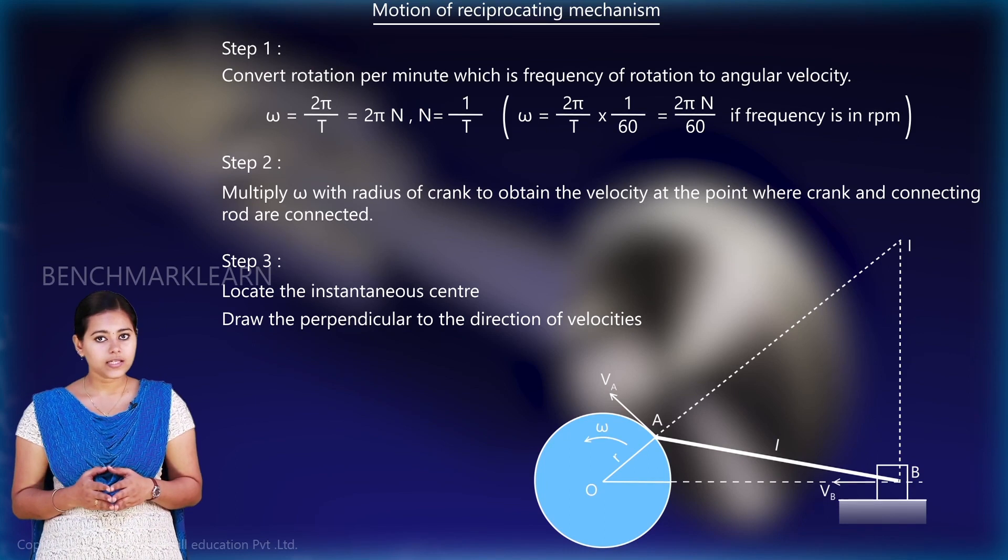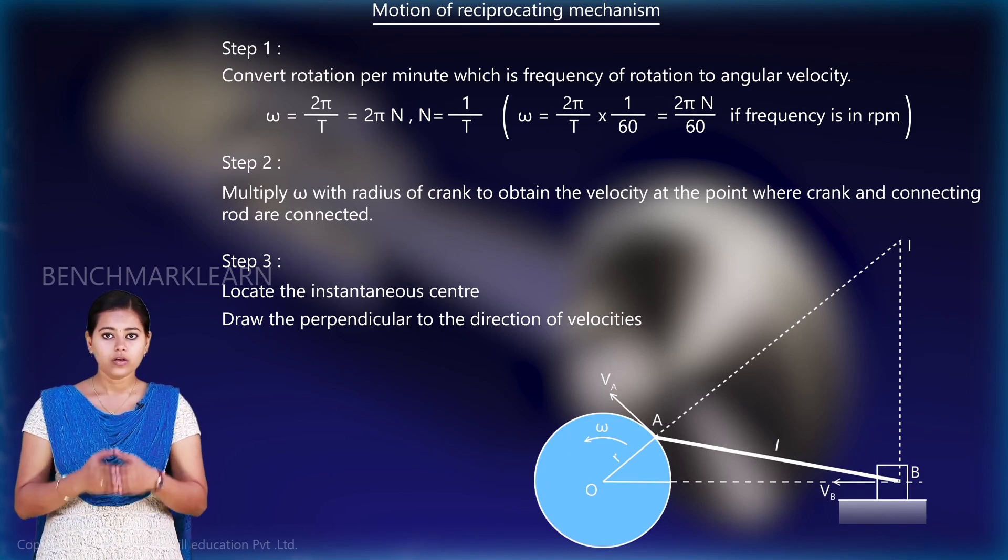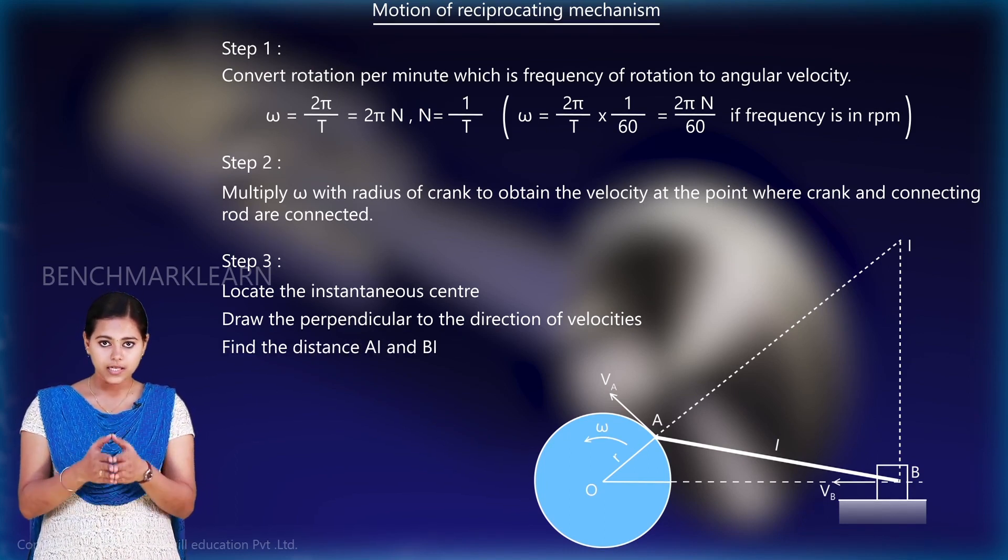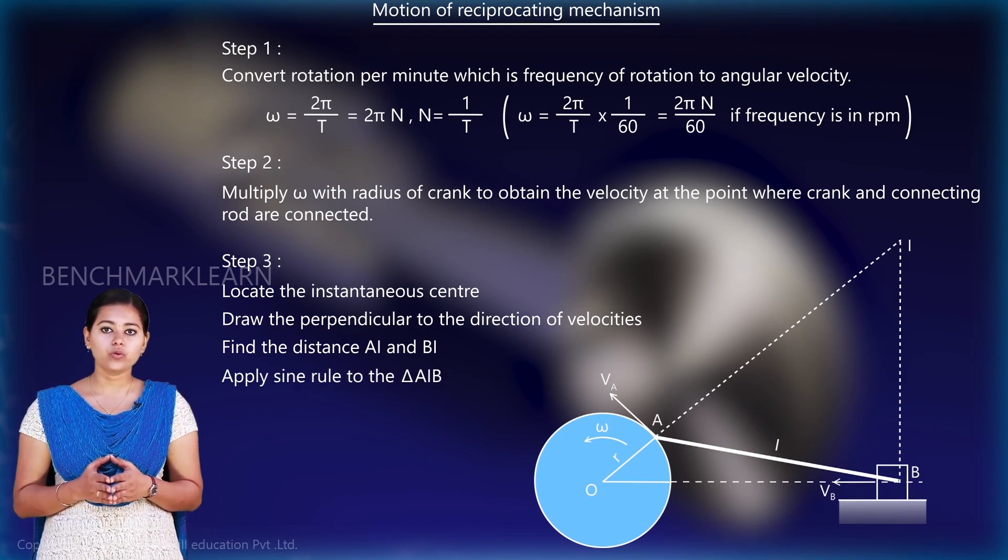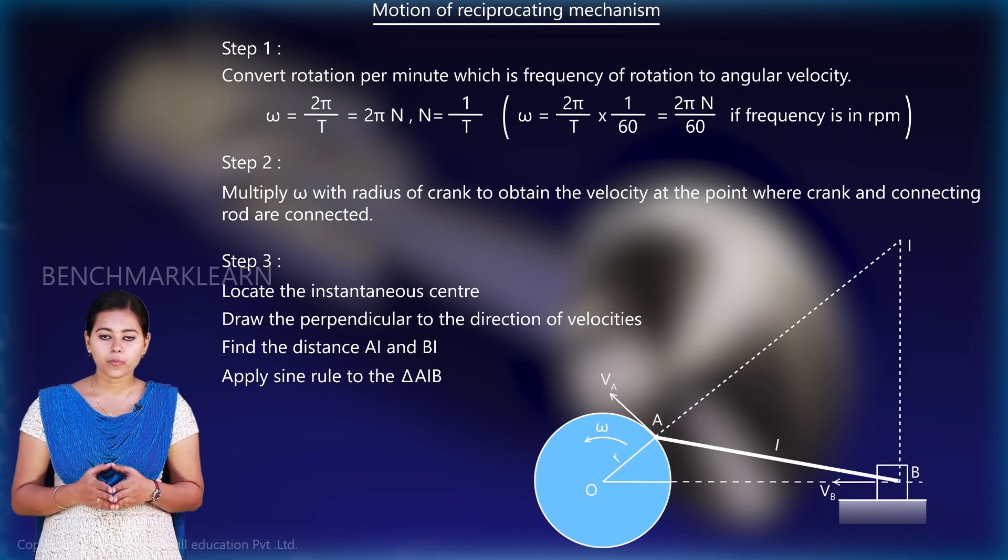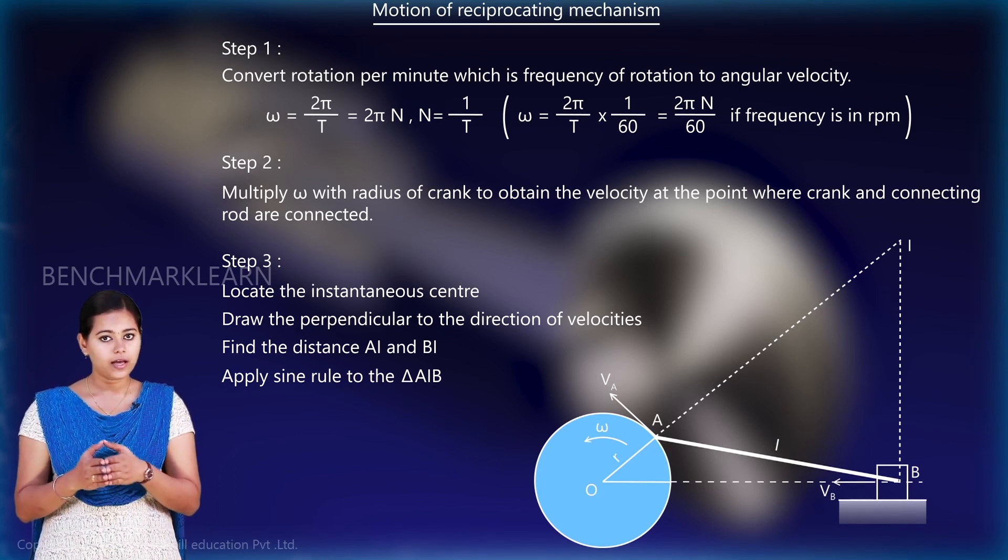Now, we will need to find the distance AI and BI. For that, we will apply sine rule to the triangle formed by the points A, B and I, that is triangle AIB.